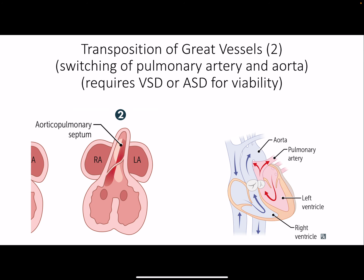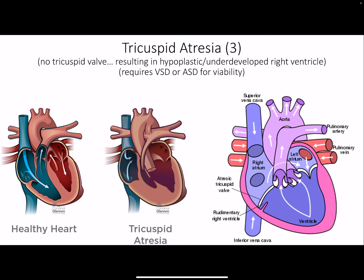Transposition of great vessels: normally there's a twisting of the aorticopulmonary septum during fetal development that positions the pulmonary artery and aorta correctly. In transposition, this rotation doesn't happen properly, so the right ventricle connects to the aorta and the left ventricle connects to the pulmonary artery. Blood coming into the right atrium goes to the right ventricle and straight to the aorta, never getting to the lungs. This is not compatible with life unless there's a VSD or ASD to allow some mixing.